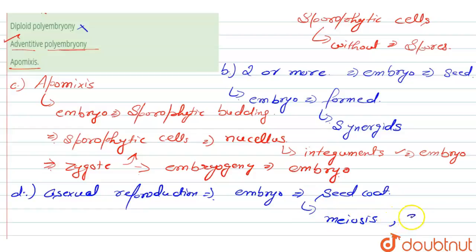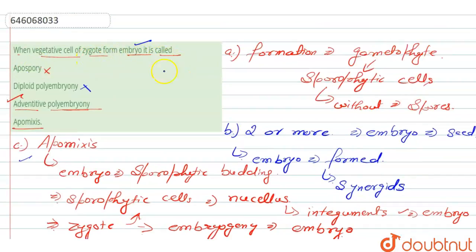Without any meiosis and also without any syngamy. So here we can say that this adventative polyembryony is one of the types of apomixis where the embryo is formed.